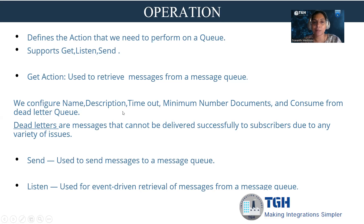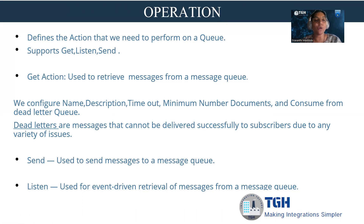When configuring the Get action, we need to specify the name, description, timeout, minimum number of documents, and consume from the dead letter queue. Timeout sets the amount of time in milliseconds that the operation will wait to receive a document. The default is 10,000 milliseconds. The values 0 and minus 1 have special meanings. When configured as 0, the operation will not wait and will receive only documents in a single message if they are available immediately.